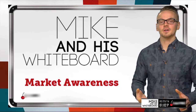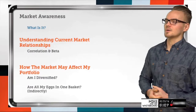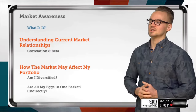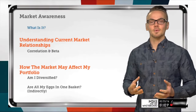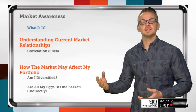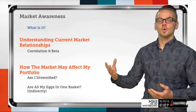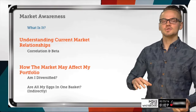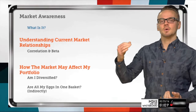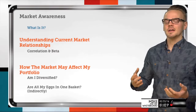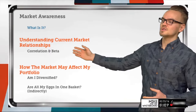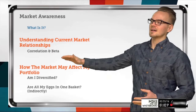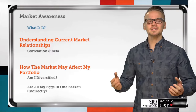When we're talking about market awareness, we're really talking about the understanding of current market relationships — that's the key takeaway for this segment. It's easy to revert back to traditional correlations, like equities being tied to bonds, but it's always important to understand current market relationships. We've got two highlighted sections here: correlation and beta, and we're going to dig into correlation today.